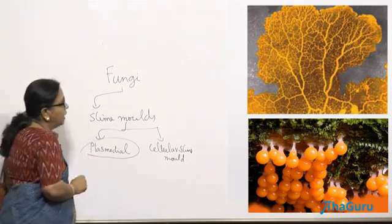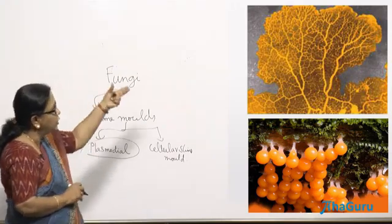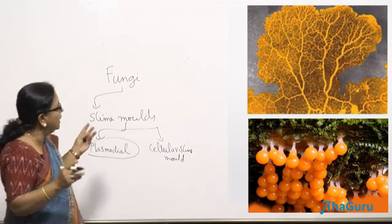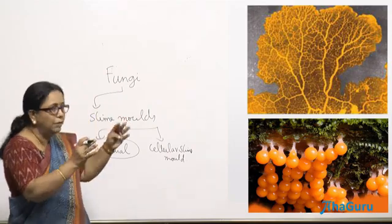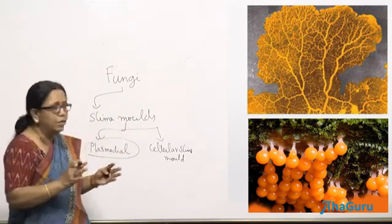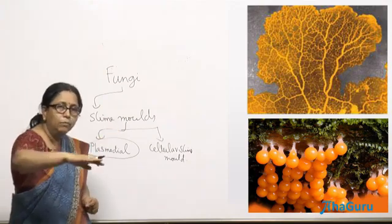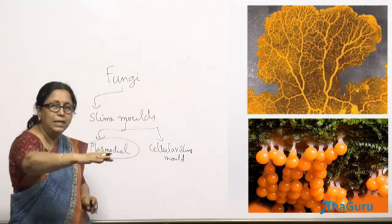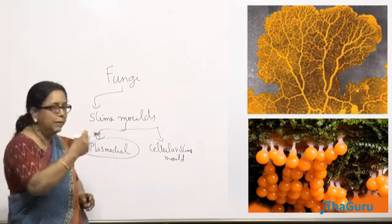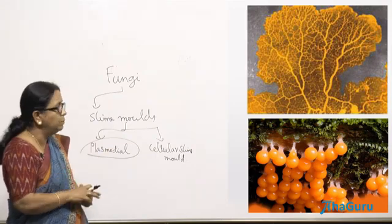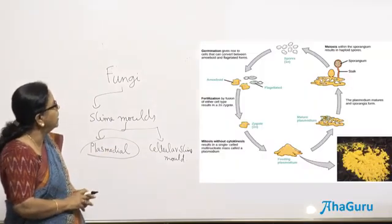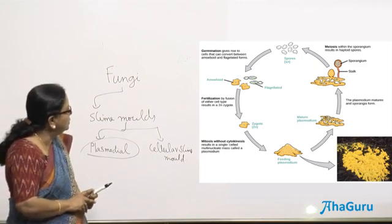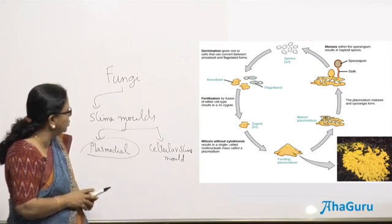The plasmodial slime mold, as seen in the picture, is very nice looking — they come in bright colors. All the organisms together form something called a plasmodium, which is a multi-nucleate body that keeps moving around together, moving on dead leaves and dead organisms and ingesting them. The plasmodial slime mold has both sexual reproduction as well as asexual reproduction.